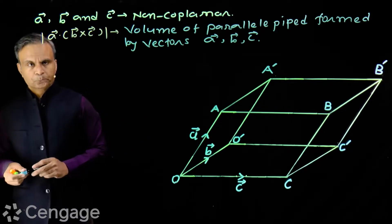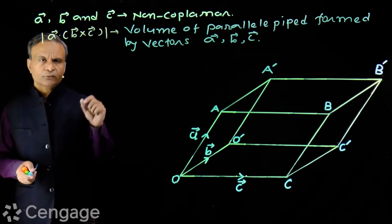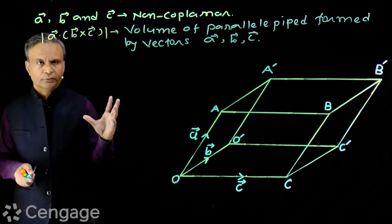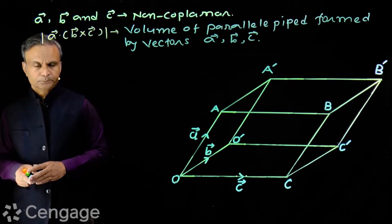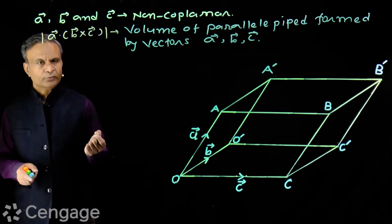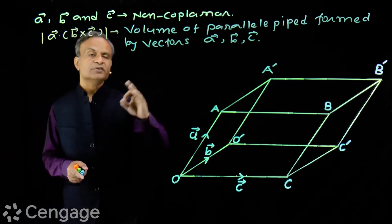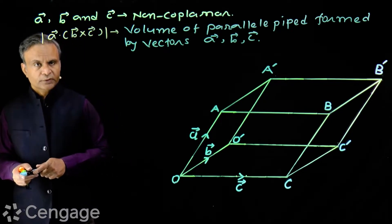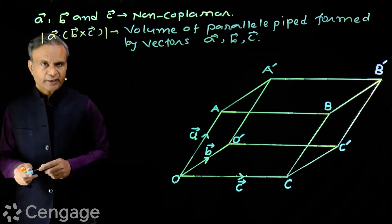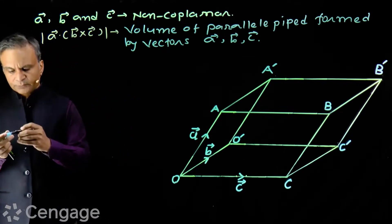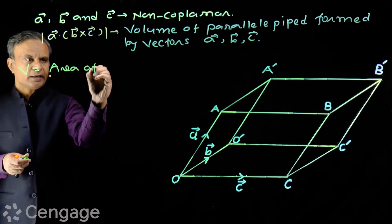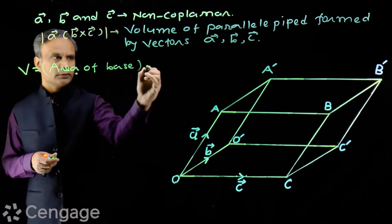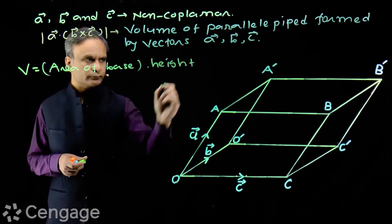How will we prove it? What is the formula for volume of a parallelepiped? It is a prism-type figure. We have a common formula for volume of prism or prism-type figures: Volume equals area of base times height.